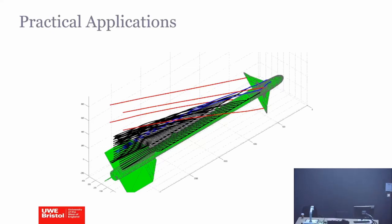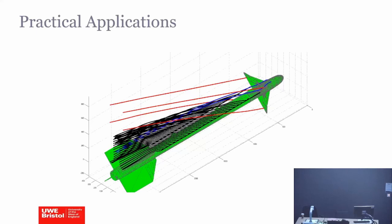How do we actually use potential flow in real life? To get the correct forces we need to include the boundary layer. What people do is use potential flow to solve the outer flow, and then use models for the boundary layer, adding them together to get the total flow picture. Actually, you can do that without having to use tools like CFX. A potential flow model plus a boundary layer model added together gives you the total picture.